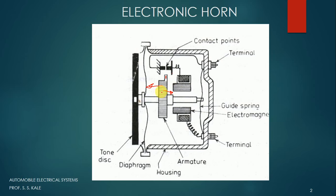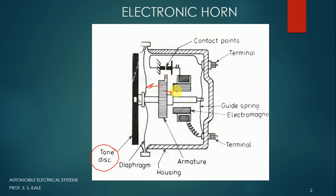As the armature moves left and right continuously, the diaphragm achieves very high frequency vibration. As it moves with very high frequency, it creates a sound. This sound is converted into a certain music by using the tone disc. The function of the tone disc is to convert the sound created by the diaphragm into a melodious sound, and we get a different kind of music at the outside. When we release the horn button, the electricity to the two terminals gets broken, the magnetic field collapses, and the sound is not created. Once again when we press the button, the armature moves left and right and the sound is created. This is all about the electric horn.